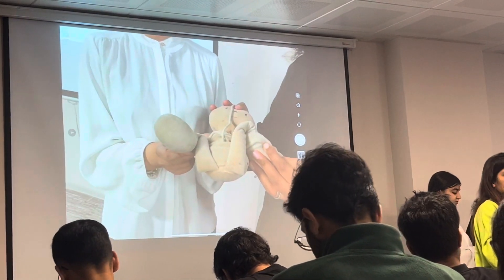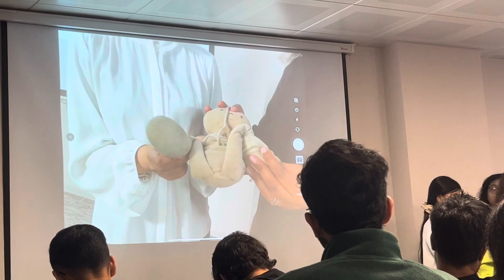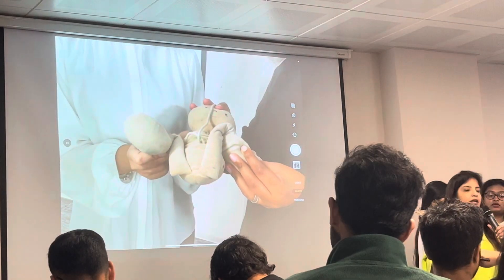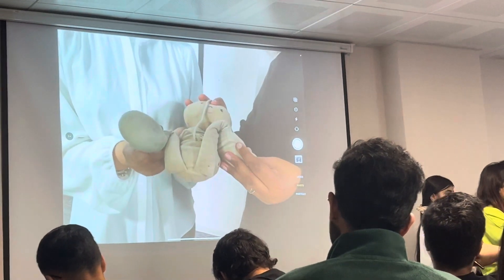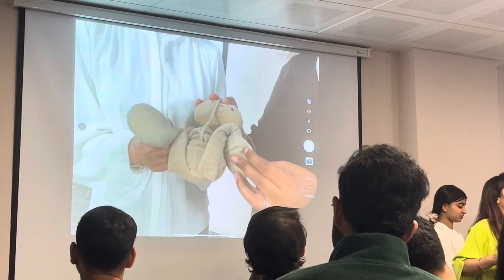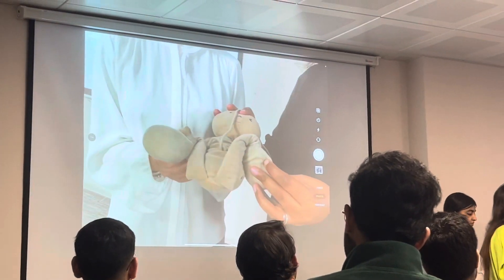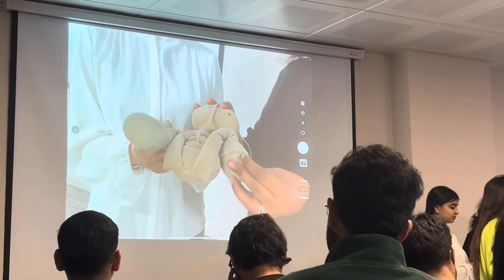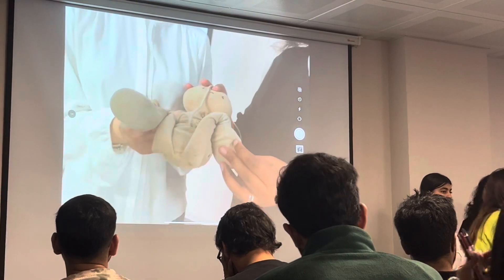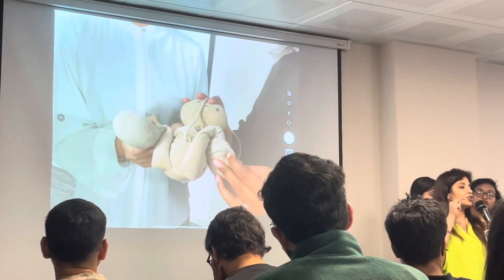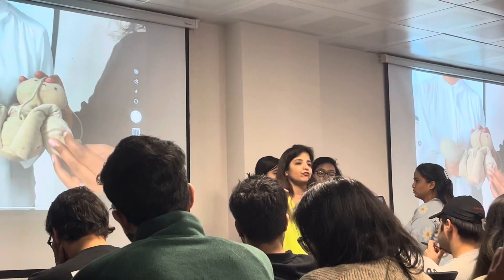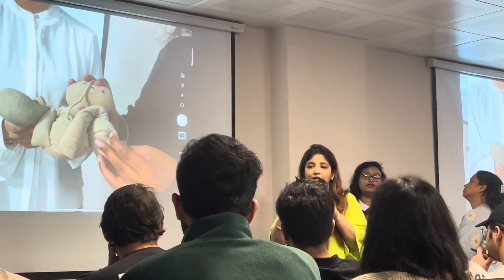Once I rotate the shoulder, I again try to deliver. If the shoulder dystocia is still not getting relief, I go to the next step. Again I will take my hand inside and forcefully bring the posterior arm of the baby out — I will deliver the posterior arm of the baby. This is called removal of the posterior arm, though actually you are delivering the posterior arm. Then you try to deliver the shoulder. So in HELPER, R stands for removal of posterior arm, which actually is delivery of the posterior arm.